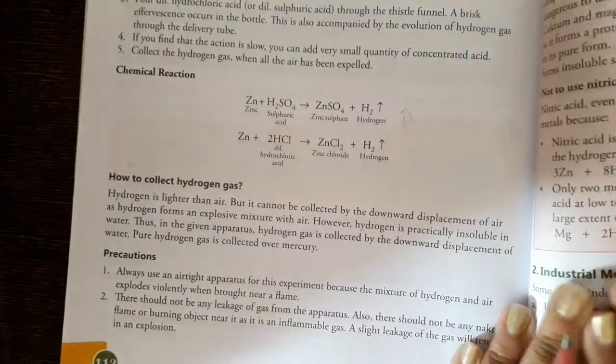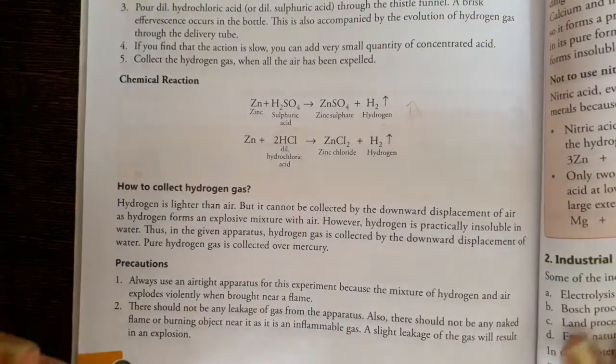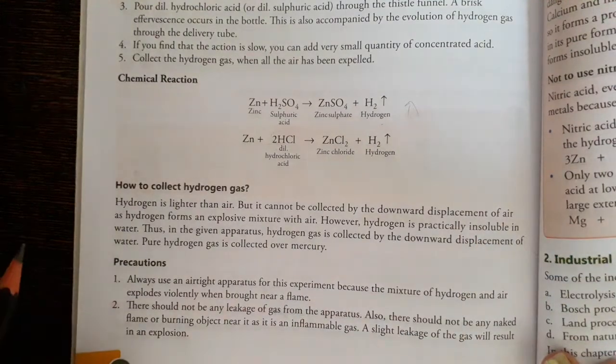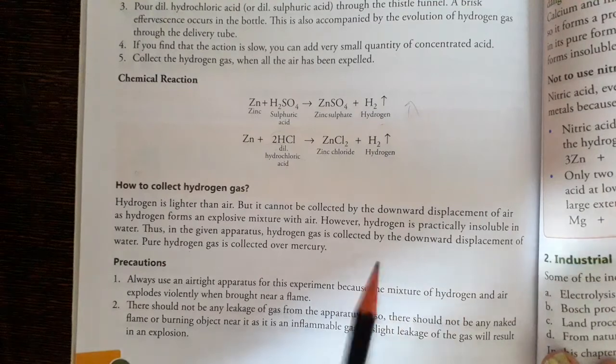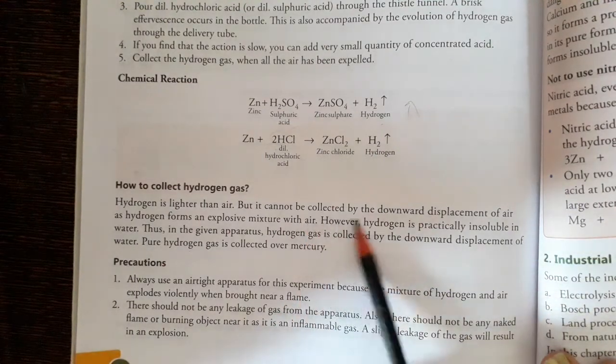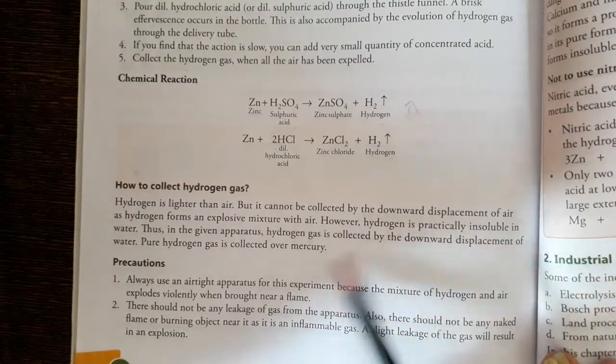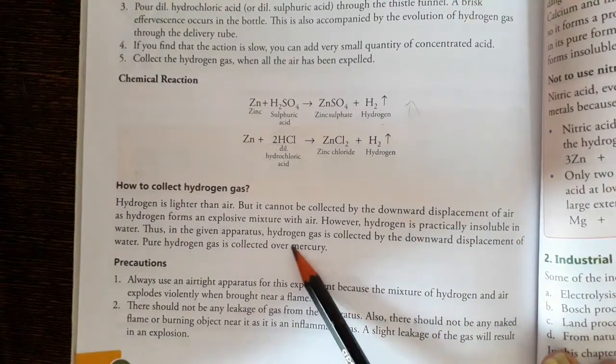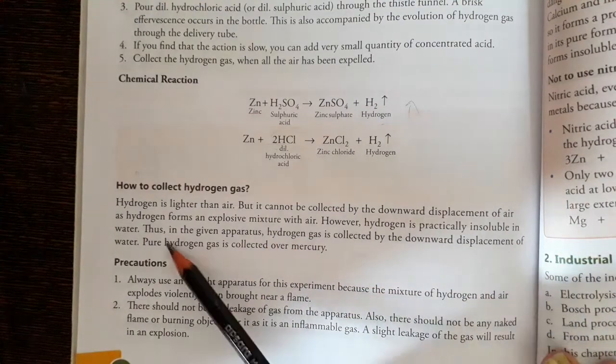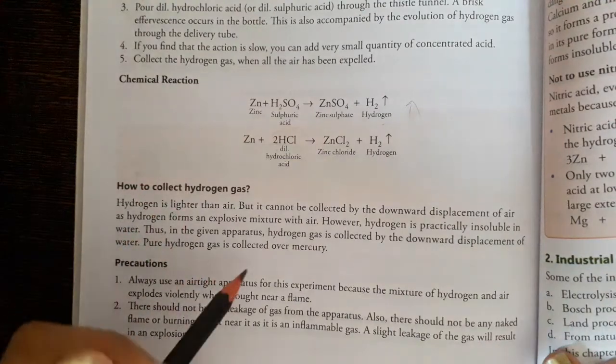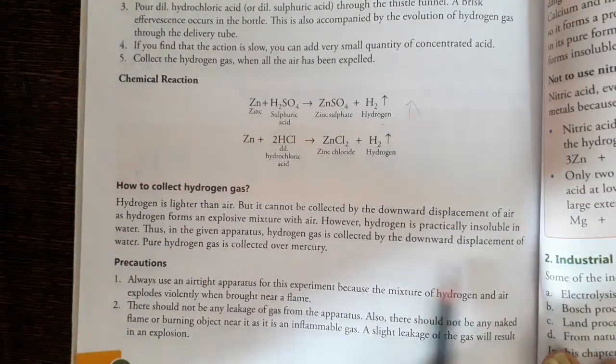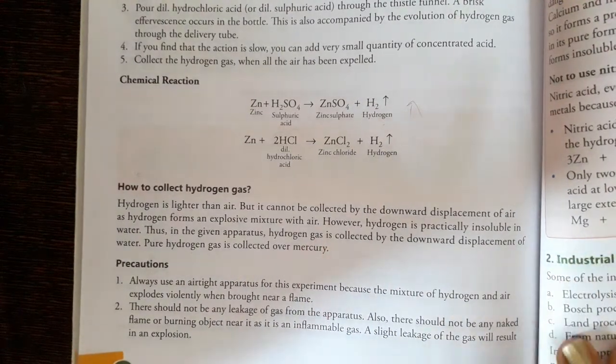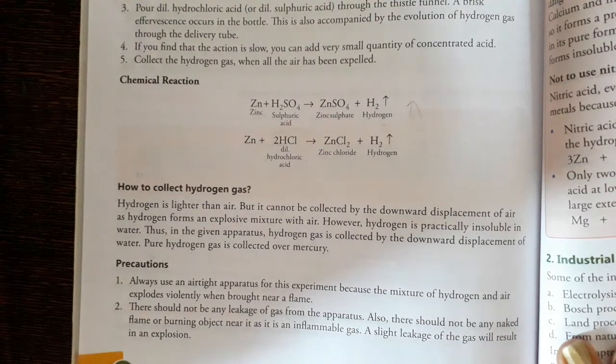How to collect hydrogen gas? Hydrogen gas is lighter than air. We cannot collect it by downward displacement of air because hydrogen forms an explosive mixture with air. However, hydrogen is practically insoluble in water. In the given apparatus, hydrogen gas is collected by the downward displacement of water. Pure hydrogen gas is collected over mercury.